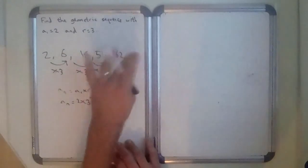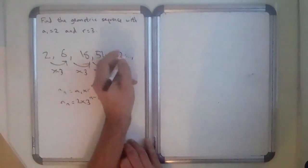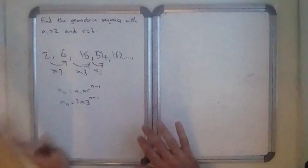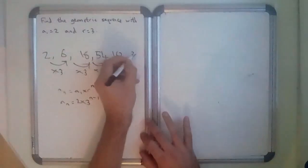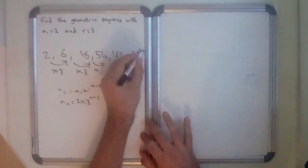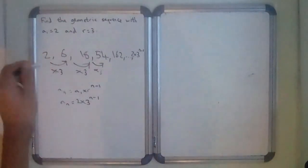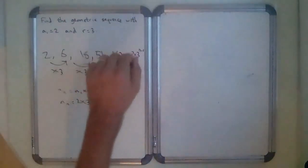So instead of putting this sort of dot, dot, dot, I could have a little dot, dot, dot, and I could say my last term is going to be 2 times 3 to the power n minus 1. So that's the whole sequence from term 1 continuing all the way up to the last term.